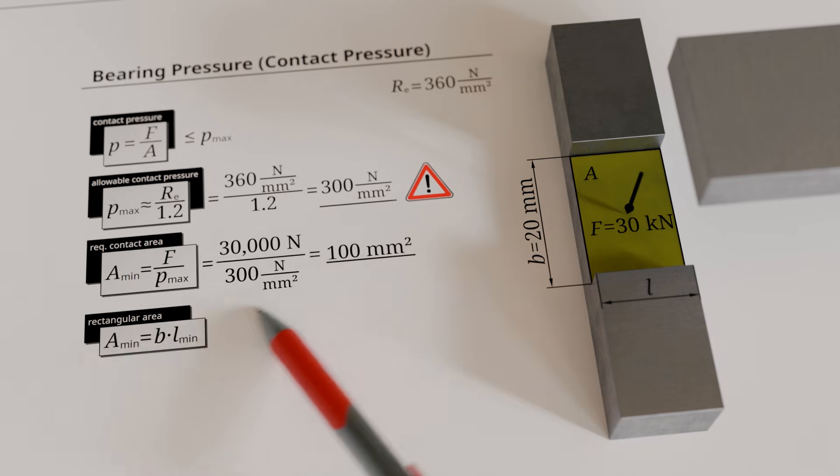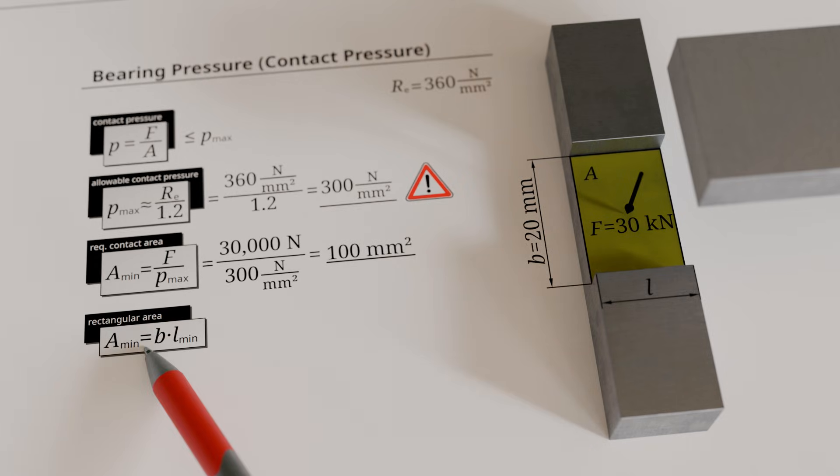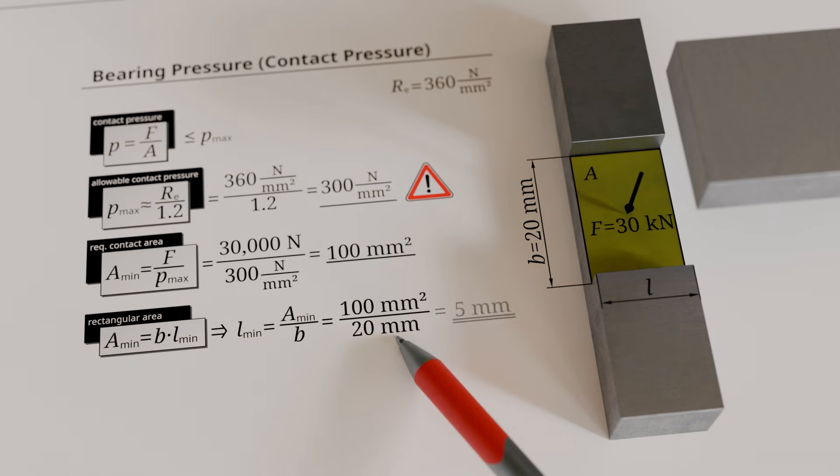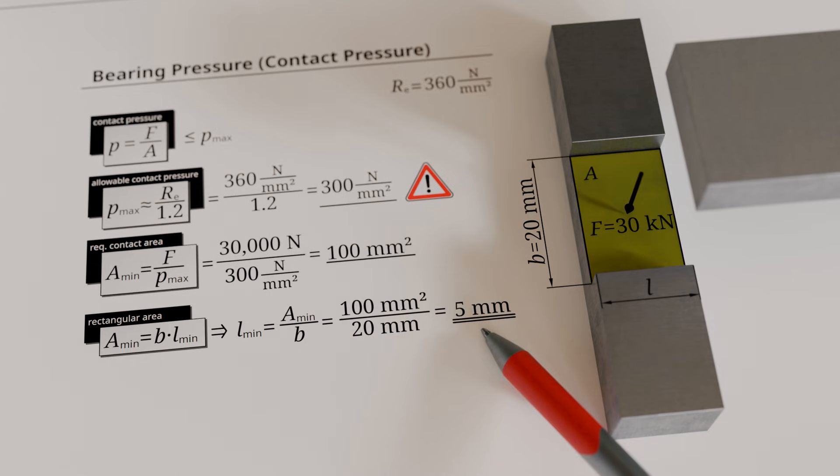The rectangular bearing area results from the product of the given width of the recess and the required length. After rearranging the formula and inserting the numerical values, we obtain a minimum required length of 5 millimeters.